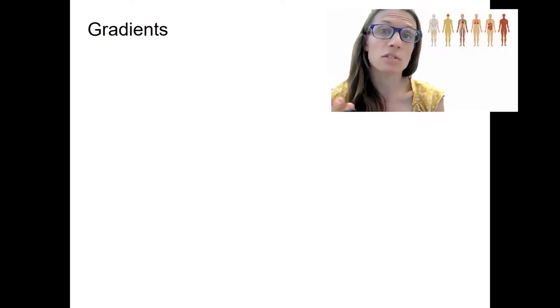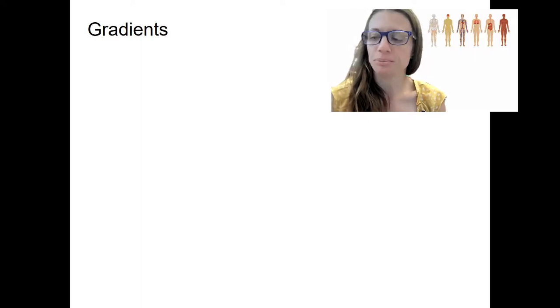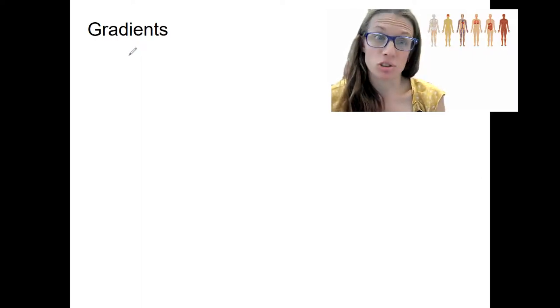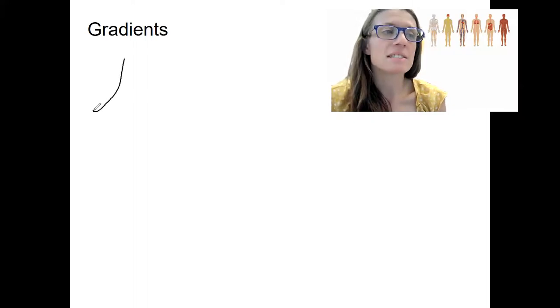So a gradient is either a difference in one place in something versus another place. So like a temperature gradient, pressure gradient, we'll talk about the ones that are relevant. A gradient also can refer to a slope. And these two ideas, those two definitions, either a difference and a slope, really can be combined and that can be helpful.